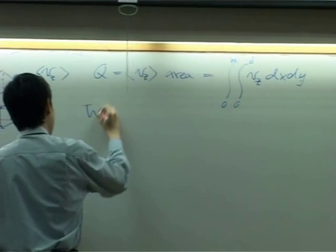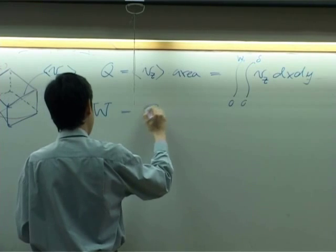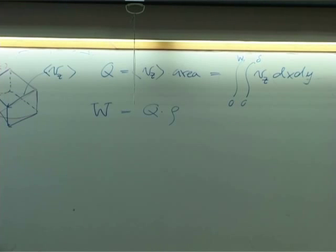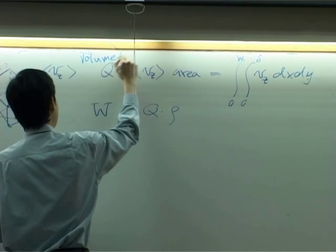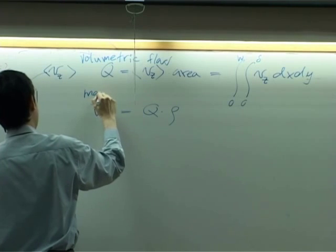And then, capital W equal to q times density. That's mass flow rate. This is volumetric flow rate, and then this one would be mass flow rate.